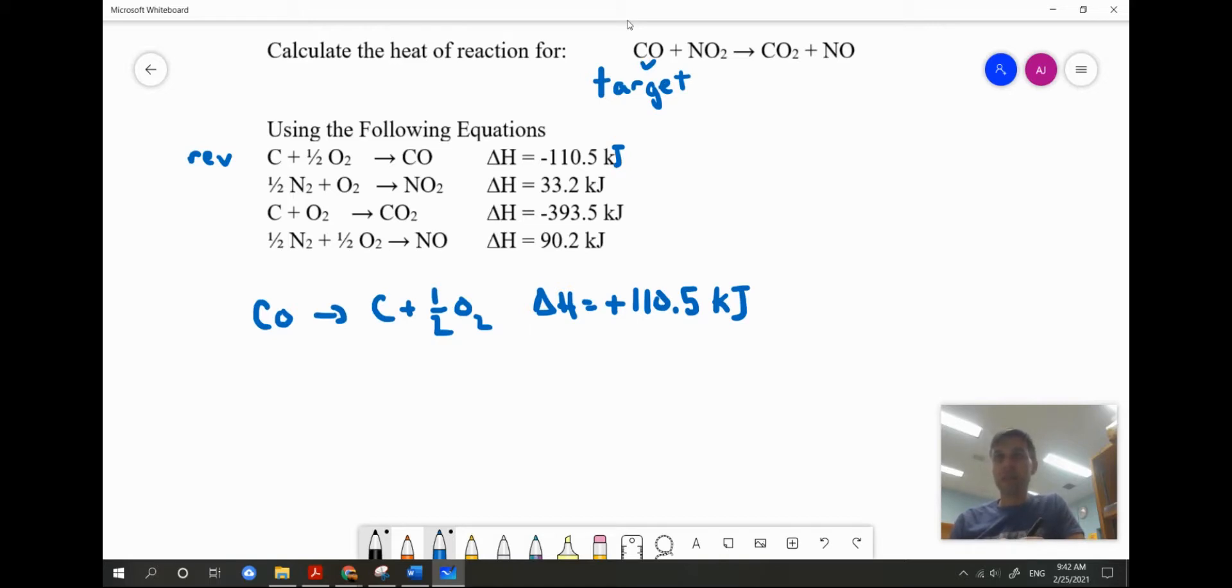Next up, nitrogen dioxide. I have one nitrogen dioxide as a product. I need one nitrogen dioxide as a reactant. So let's reverse that reaction as well. On my product side, I need carbon dioxide and nitrogen monoxide, and I'll need one of each. And note that in my known equations, I have one carbon dioxide and one nitrogen monoxide on the product side. So I don't need to make any changes to these. So I'm just going to rewrite these below.